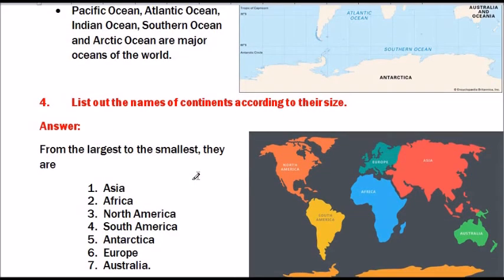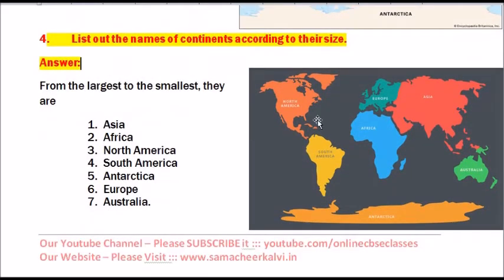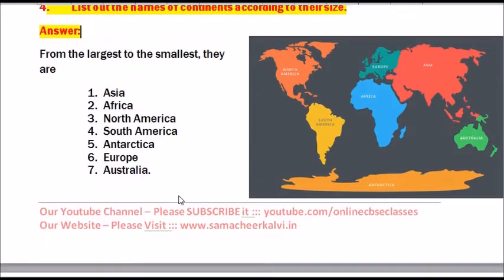Question number 4: List out the names of continents according to their size. From the largest to the smallest, they are: Asia, Africa, North America, South America, Antarctica, Europe and Australia.